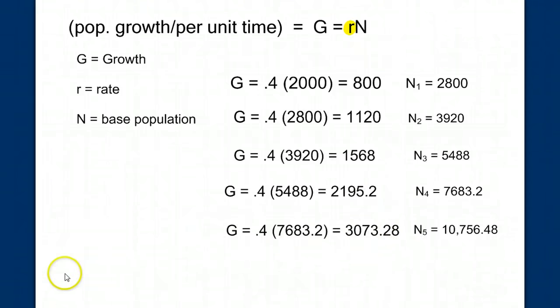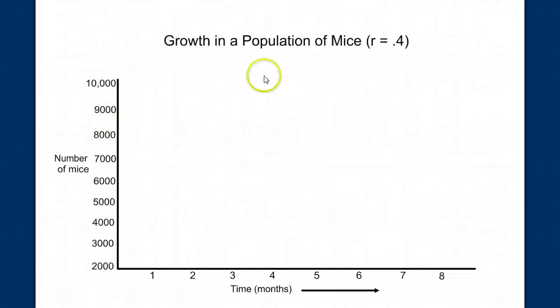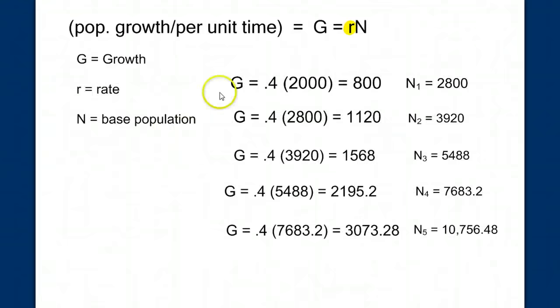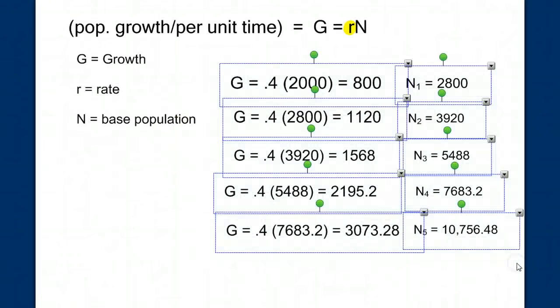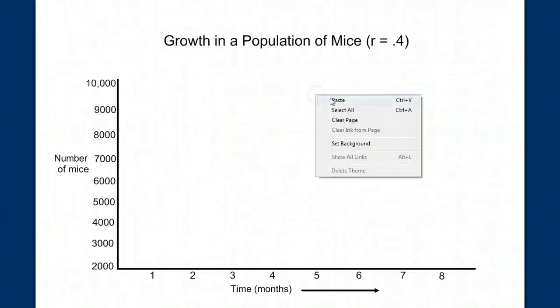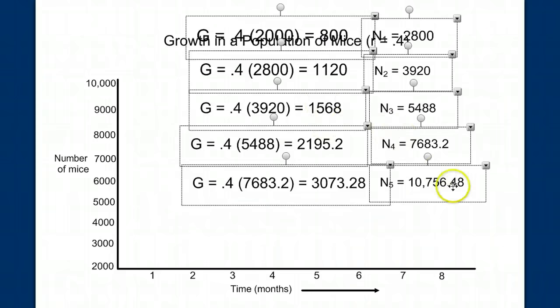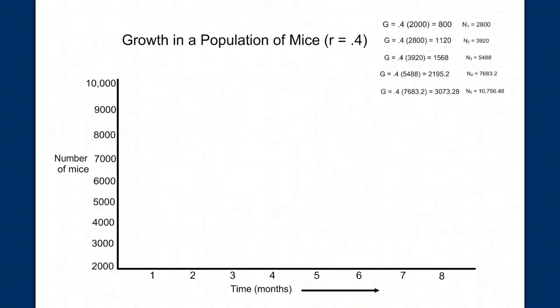What we need to do is put this onto a graph. Here's what our graph would look like. The growth in a population of mice with an R of 0.4, or an intrinsic rate of growth of 0.4. Remember, R is birth rate minus death rate. And we have our time in months down at the bottom, and our number of mice on the side, starting with our original population of 2,000. Let's bring our data over from the other page. Let's grab this, copy, and paste that here for a moment. We'll make it smaller. Give me one second. Okay, I made that smaller now.